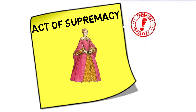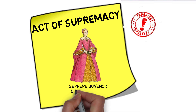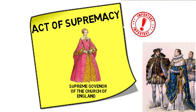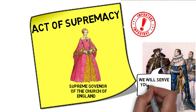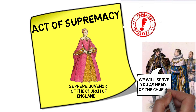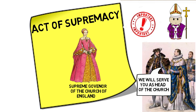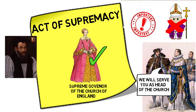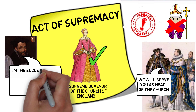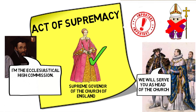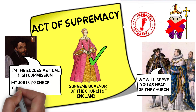The Act of Supremacy is probably the most important one. It establishes Elizabeth as being Supreme Governor of the Church of England. This means that all clergy and all royal officials have to swear an oath of allegiance to her. This clearly sets the line between Catholic and Protestant — no longer are the clergy responsible to the Pope; they are now responsible to Elizabeth. It also sets up an ecclesiastical high commission to make sure that everybody in the church is following Elizabeth's religious settlement.